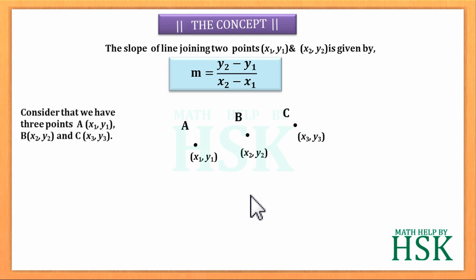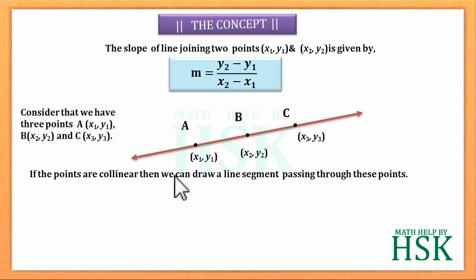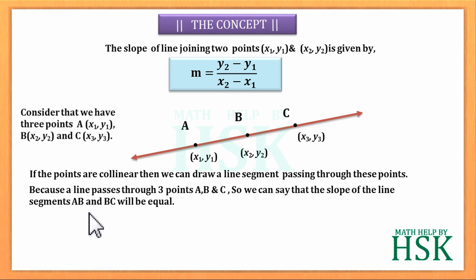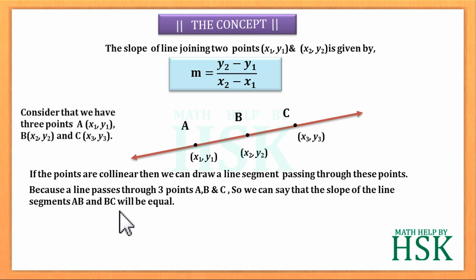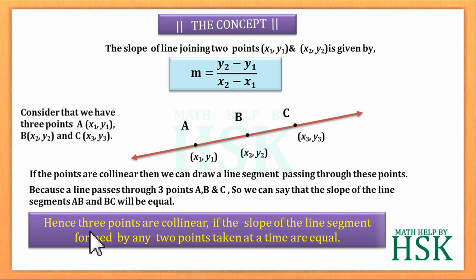If three points are collinear, a line will pass through all three points A, B, and C. So we can say that the slope of line segments AB and BC will be equal. Hence, three points are collinear if the slopes of the line segments formed by any two points taken at a time are equal.